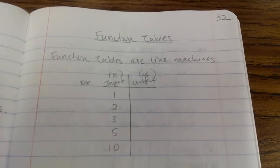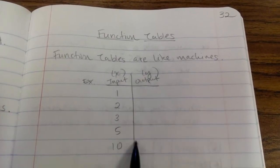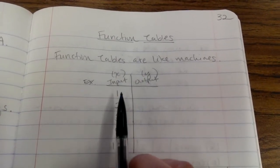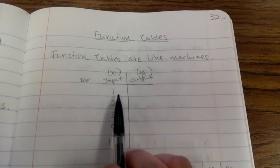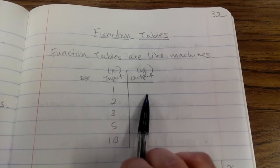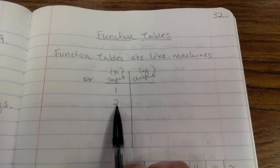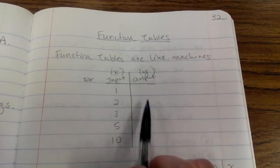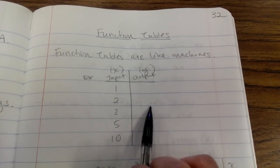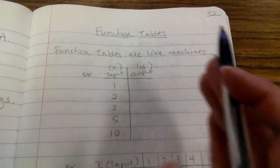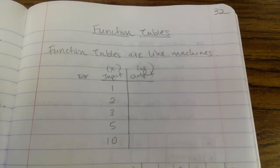For example, let's say here's a table and you put in one. The table will do something to the one and it'll come out with another number. Let's say you put in two into the table — the table will do something with two and then it comes out with another number. So tables are like machines; function tables are just like machines.